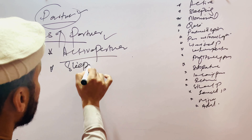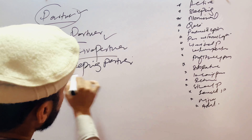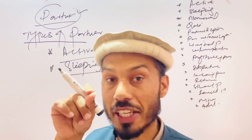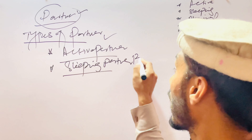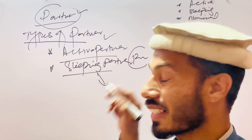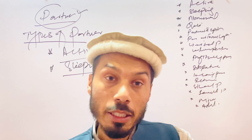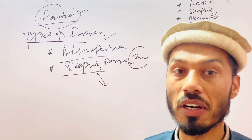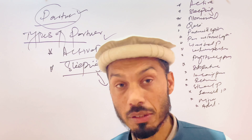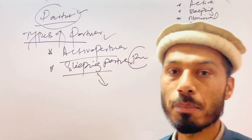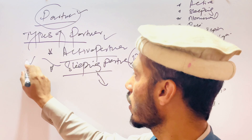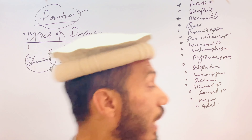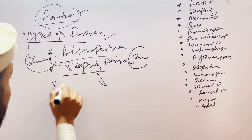The second type is the sleeping partner. Sleeping partners are those who do not participate in every type of activity of the partnership business. They are partners of the business but do not participate in every function of the organization. This type of partner is also called a dormant partner.